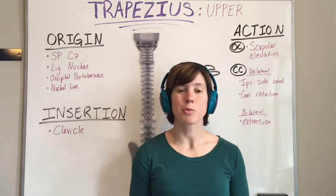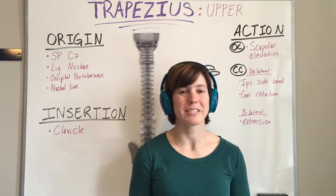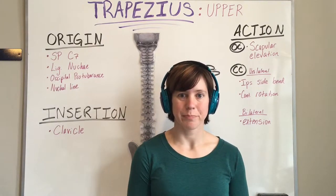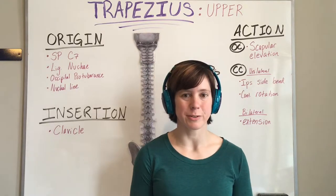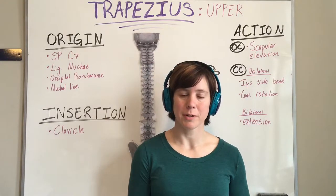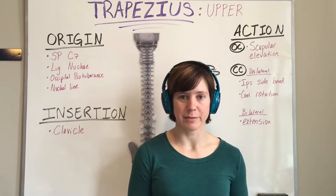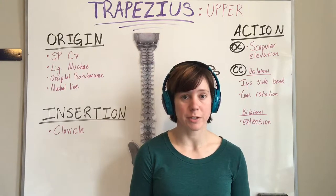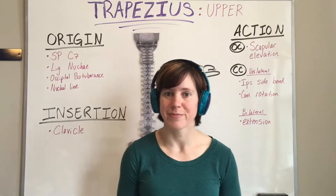This video will review the anatomy of the trapezius muscle. There are three parts to the trapezius muscle: an upper, middle, and lower trapezius. We're going to start with the upper trapezius.